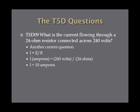What is the current flowing through a 24 ohm resistor connected across 240 volts? I equals E over R, so I equals 240 volts divided by 24 ohms, which comes to 10 amperes. You are allowed a calculator during the exam if you get flustered, and the questions are multiple choice, so if you can estimate in your head well enough, you should be able to find the right answer.